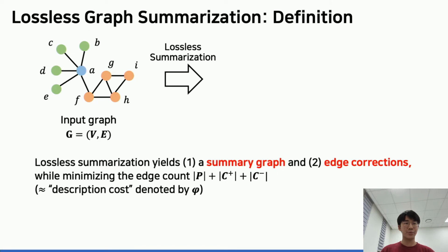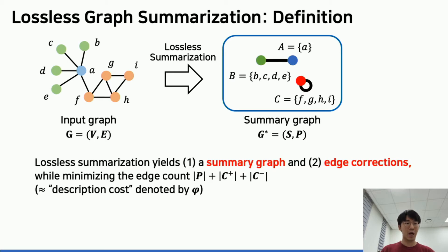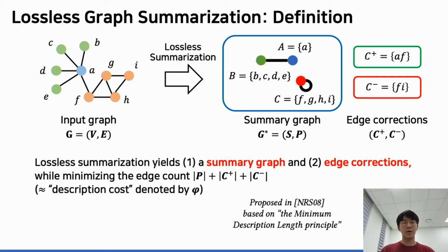To describe the compressed graph, we only need two thick edges, one addition edge and one deletion edge, which adds up to four edges in total. This process, named lossless graph summarization, aims to minimize the description cost for the graph. The objective function was proposed based on the minimum description length principle.